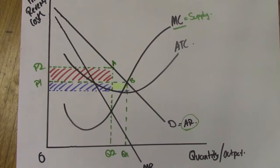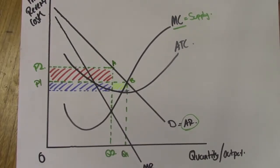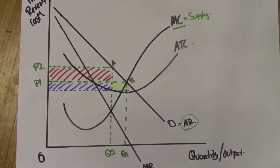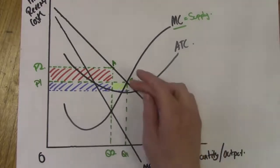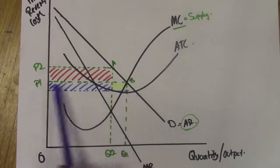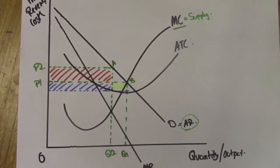Now, if governments intervene, or if the firm switches objectives away from profit maximization and moves towards being allocatively efficient — meeting the needs of society, producing goods at a price consumers are willing and able to pay — as we lower that price, there's a movement along the demand curve from A to B. More people are now willing and able to purchase that good or service, and consumption increases to Q1, which is what governments want.